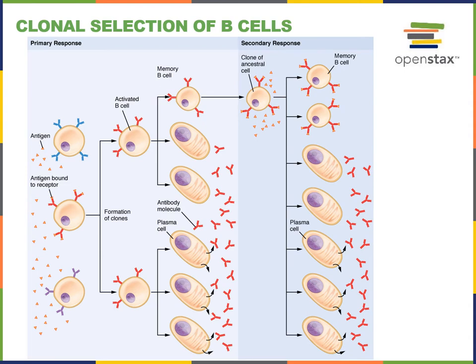Here we see the example of clonal selection for B lymphocytes or B cells, where we have three hypothetical examples of naive B lymphocytes, using different colors to distinguish the different shapes of the antigen binding site of the antibodies on these naive B lymphocytes. The blue, red, and purple antibodies bind to different antigens. This specific antigen shown in the illustration can only bind to the red antibody, and not to the blue antibody or the purple antibody.